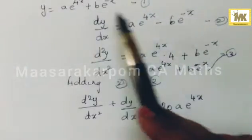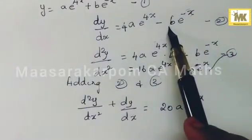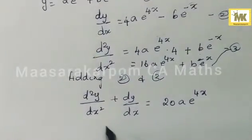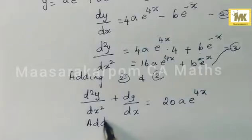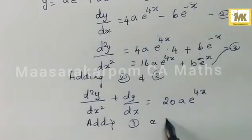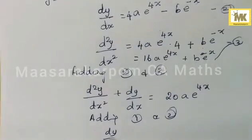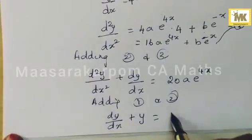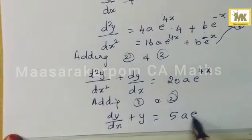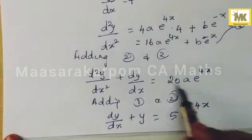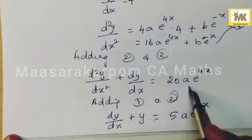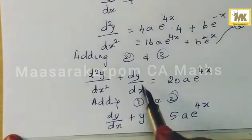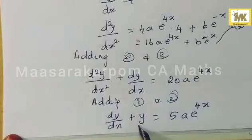Similarly, adding equations 1 and 2, b e to the power minus x cancels, and bring this in terms of this.